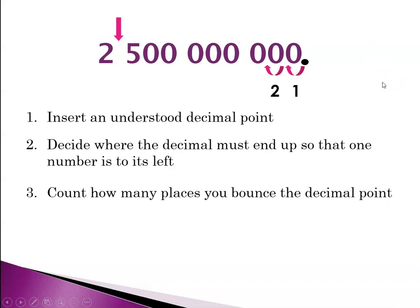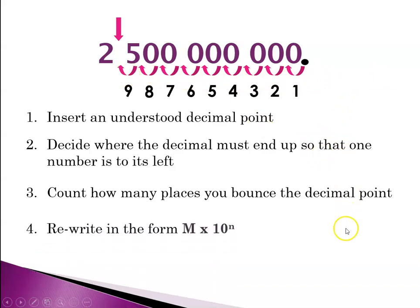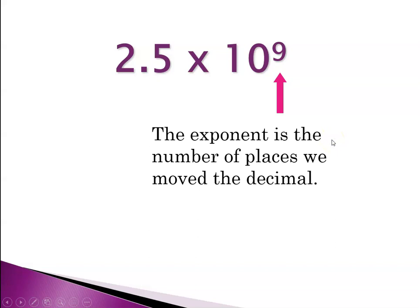So we're going to do that. One, two, three, four, five, six, seven, eight, and nine. So now that we know that we have to move the decimal nine places, we can rewrite in the form of m times ten to the n. So that would be 2.5 times ten to the ninth, where the exponent tells you the number of places that you had to move the decimal.